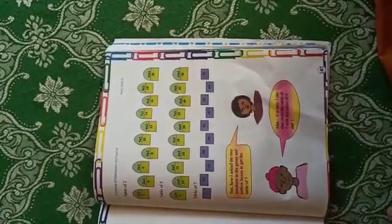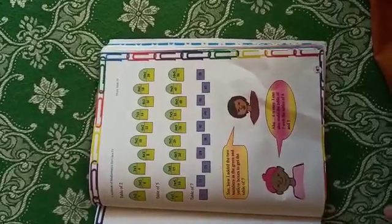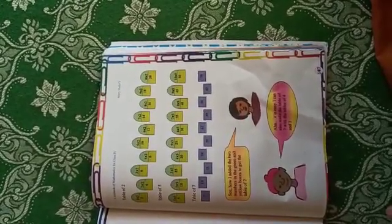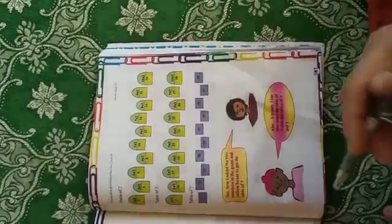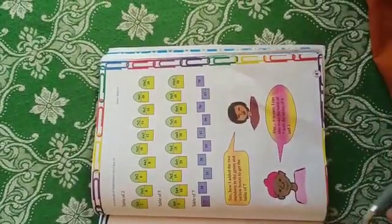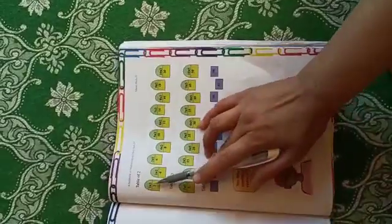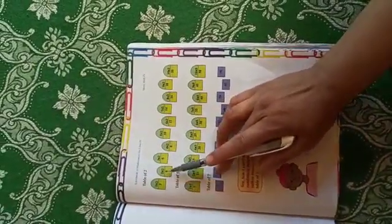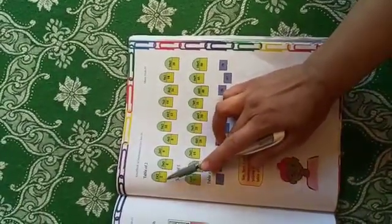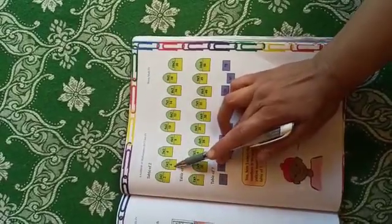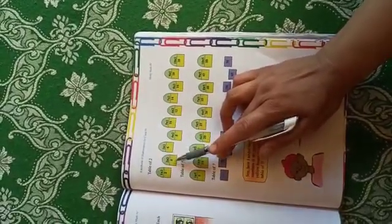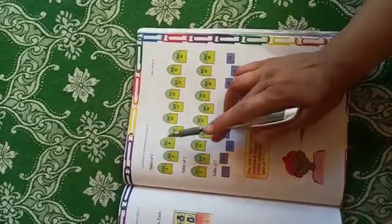Bismillahirrahmanirrahim, assalamu alaikum wa rahmatullahi wa barakatuh. Let's make the tables. First, I'll make the table of two. Two ones are two, two twos are four, two threes are six, two fours are eight.